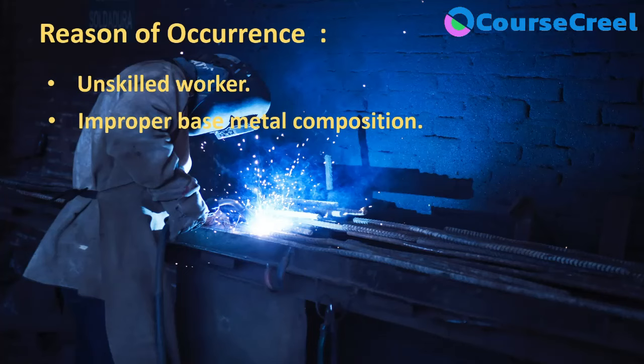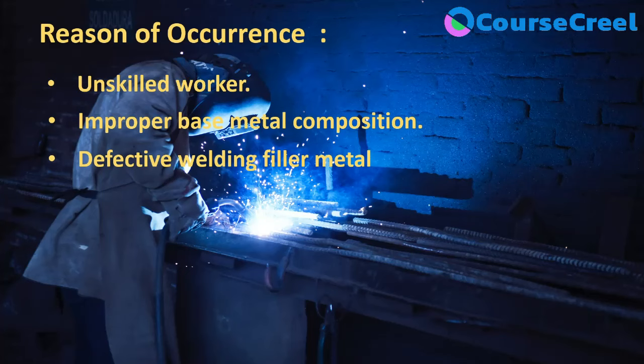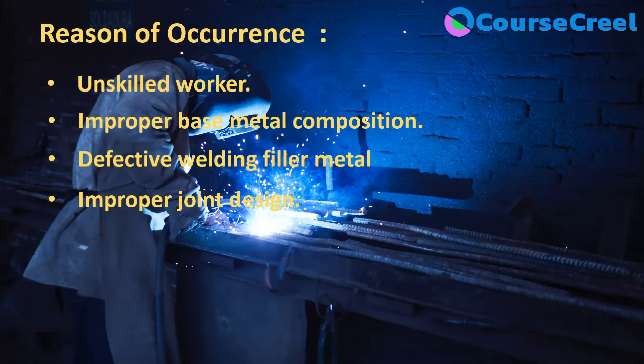The second reason is improper base metal composition. If the base metal composition is not proper, the chances of welding defects increase. The third is defective welding filler metal — if the welding filler metal is defective, it can affect the welding process and create welding defects. Next is improper joint design: if the joint design is not proper, parts are not placed properly, or the angle is not defined, this is one of the reasons for welding defects.